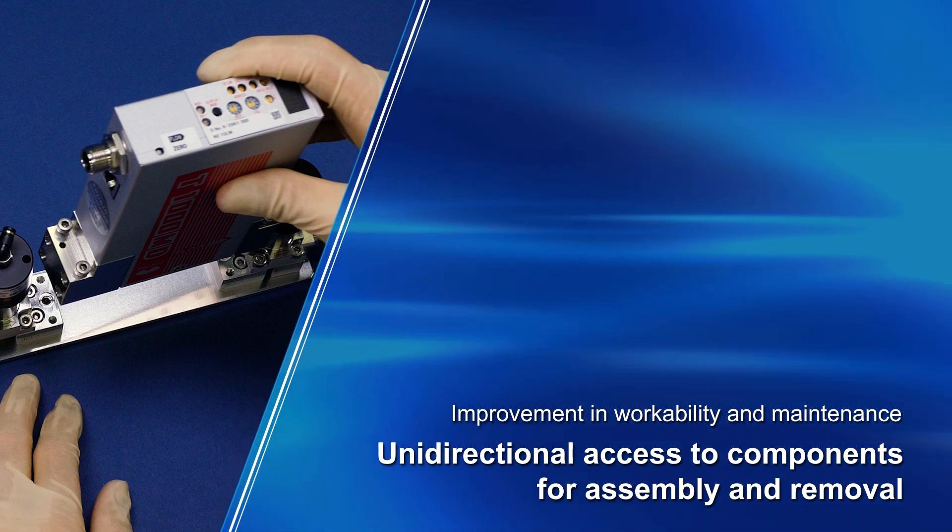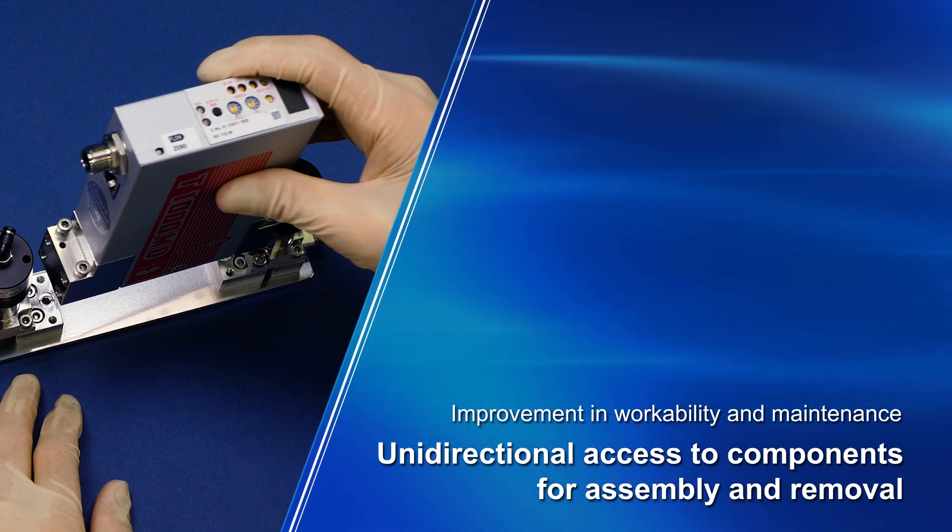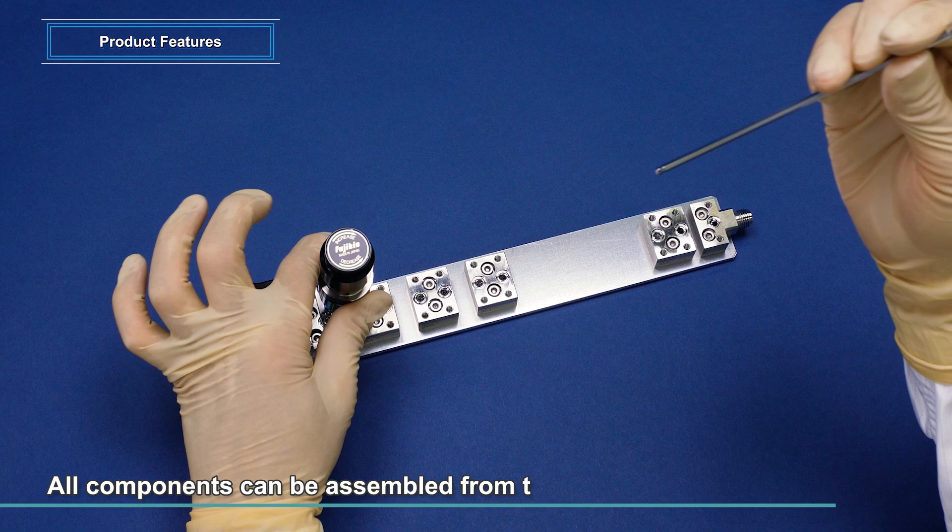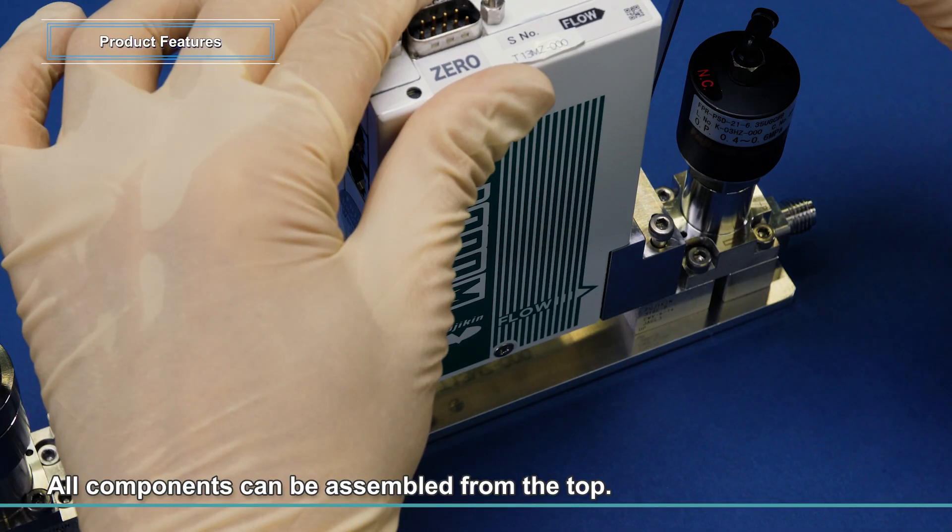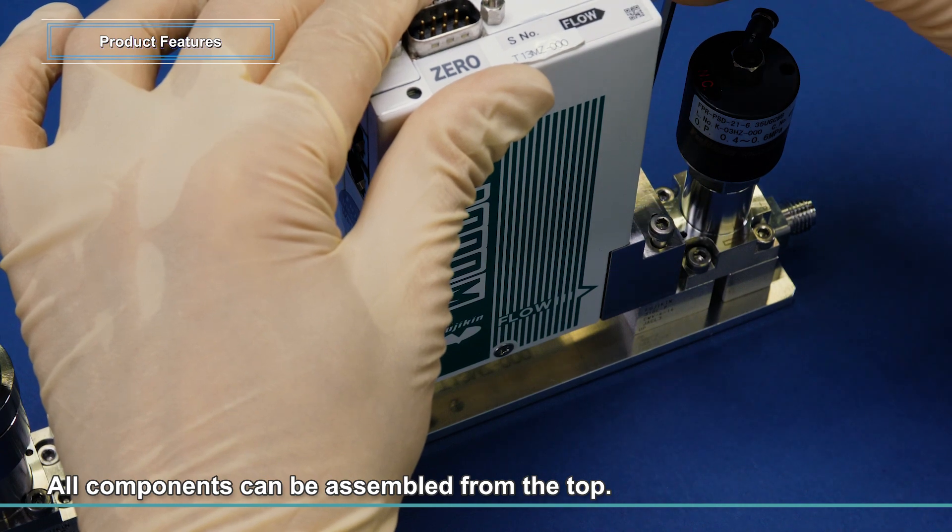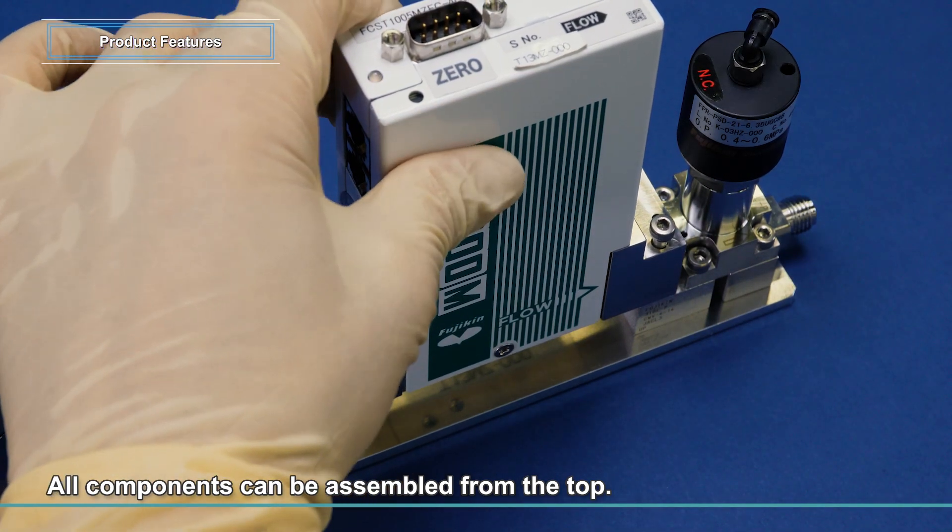Unidirectional access to components for assembly and removal: Since IGS is designed to allow assembly and removal of all parts from above, an individual component can be removed for replacement without interfering with other devices.